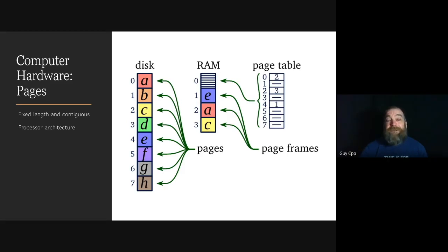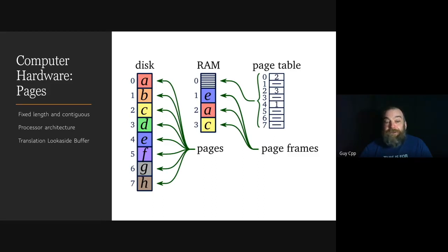Since every memory access must be mapped from virtual to physical address, reading the page table every time can be quite costly. Therefore, a very fast cache called the translation look-aside buffer — the TLB — is often used. The TLB is of limited size, and when it cannot satisfy a given request — a TLB miss — the page tables must be searched manually, in hardware or software depending on the architecture. Larger page sizes mean a TLB cache of the same size can track larger amounts of memory, avoiding costly TLB misses.